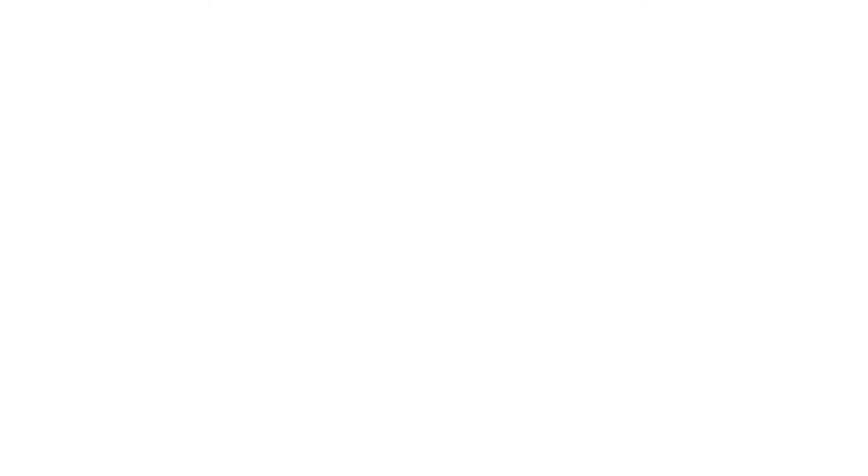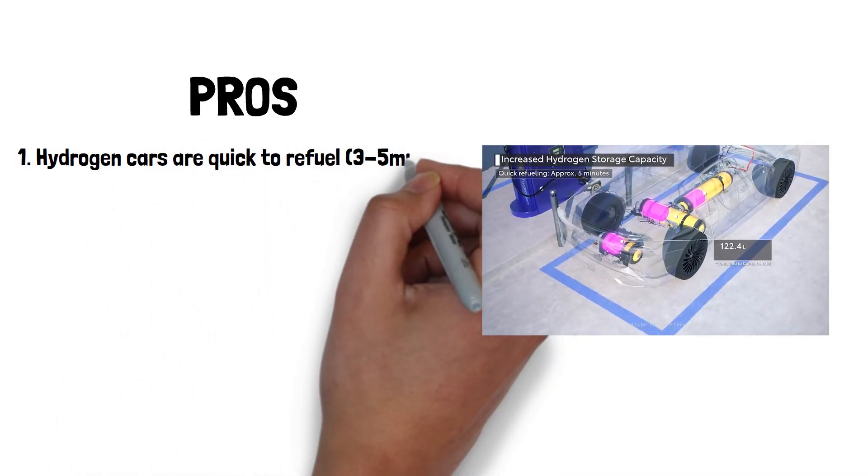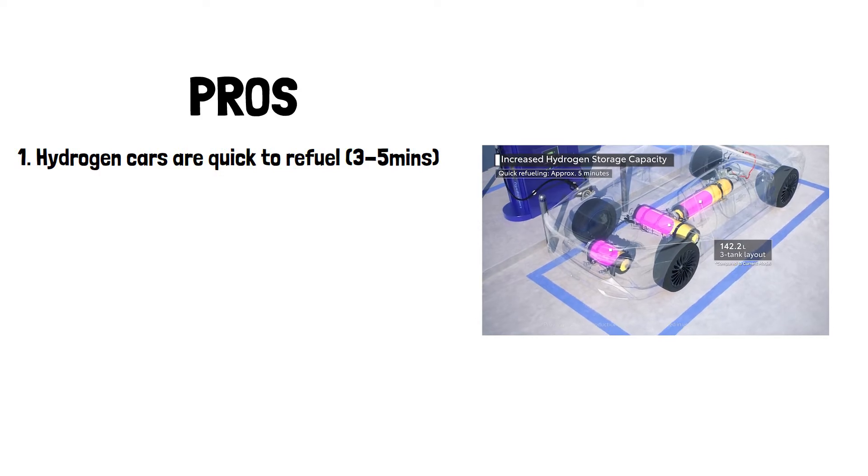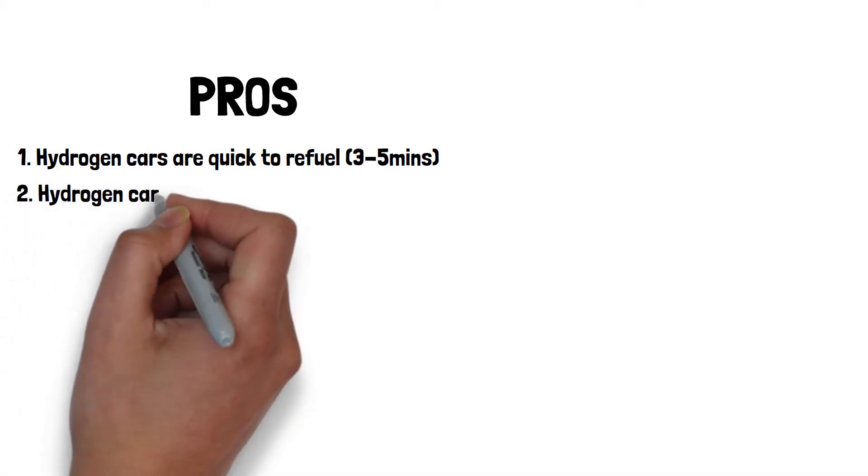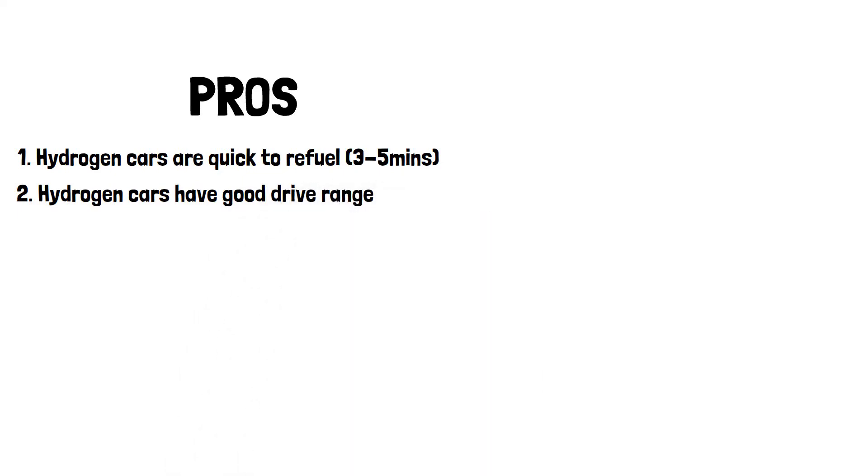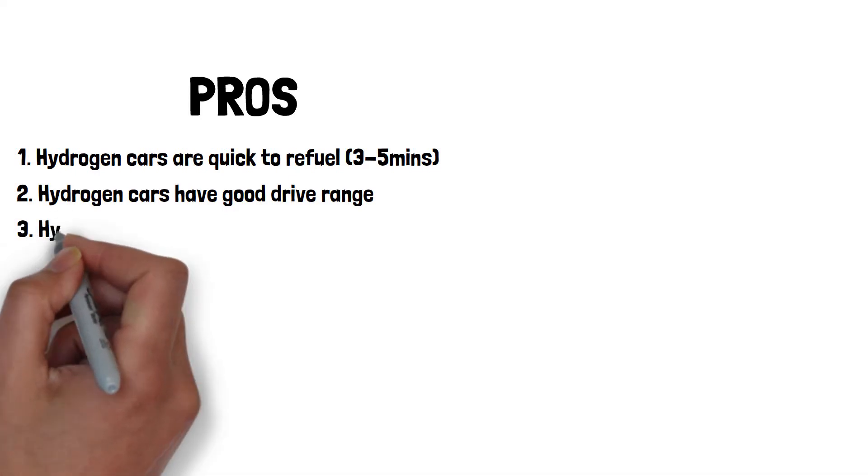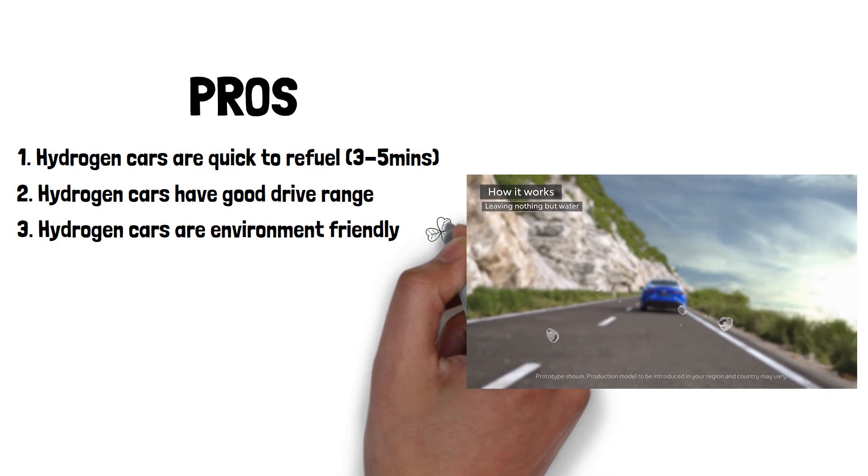To end things up, let's name a few pros and cons of owning a fuel cell vehicle, starting with the pros. Number one, hydrogen cars are quick to refuel, averaging three to five minutes. Just as reference, electric vehicles can take up to 12 hours depending on the charging station and battery state. Number two, hydrogen vehicles have a drive range comparable to gasoline cars. For example, the Toyota Mirai offers 350 to 400 miles per tank. And lastly, number three, hydrogen cars are environmentally friendly since their only emission is water.